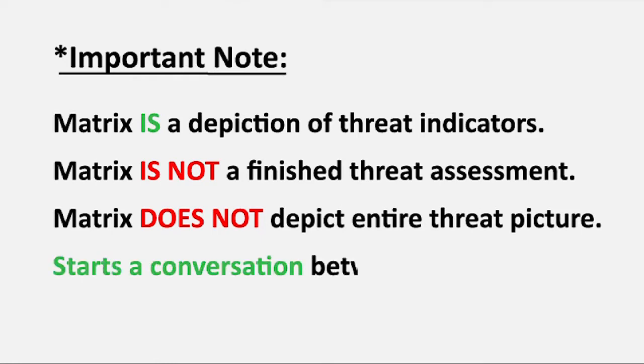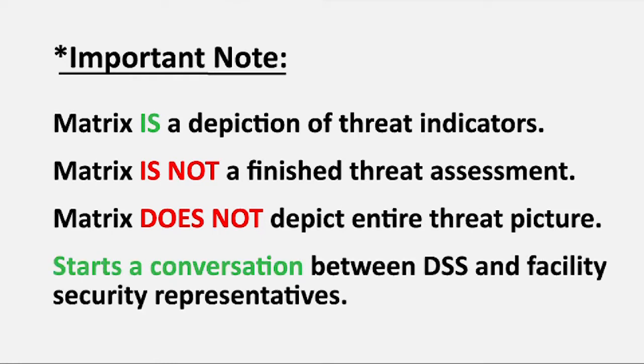It is designed to be a conversation starter between DSS personnel and facility security representatives. CI will help assist IO personnel in understanding the matrices, and CI headquarters will support the Tier 1 FOCI annual meetings with company, not facility matrices. It's also important to know that field industrial security representatives will be responsible for preparing facility level matrices.